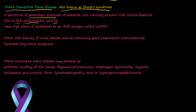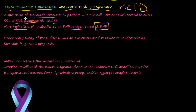A unique feature of mixed connective tissue disease, also called MCTD, is high titers of antibodies toward an RNP antigen called U1 RNP. You can run that test to confirm the diagnosis. Other features of MCTD include very little renal disease and an extremely good response to corticosteroids, giving patients a very favorable long-term prognosis.